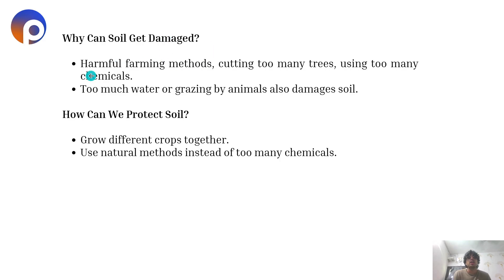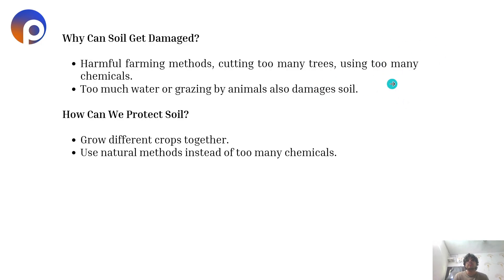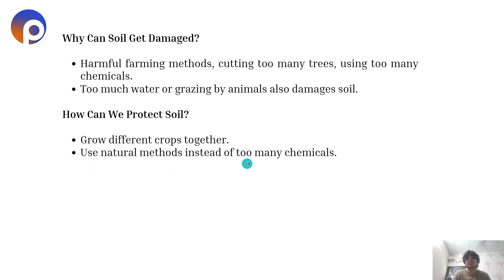Soil can get damaged through harmful farming methods, cutting too many trees, using too many chemicals, too much water, or grazing by animals. To protect the soil, we can grow different crops together and use natural methods instead of too many chemicals.